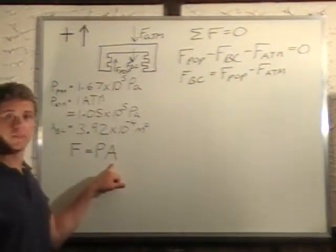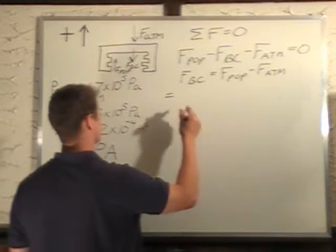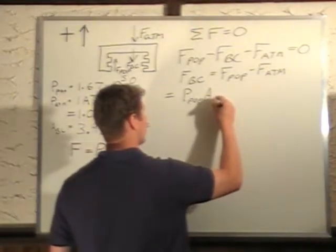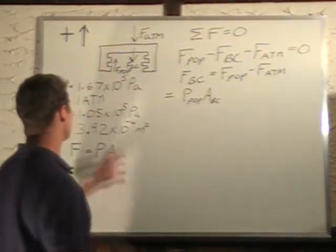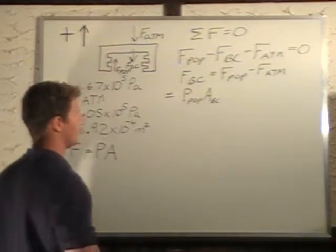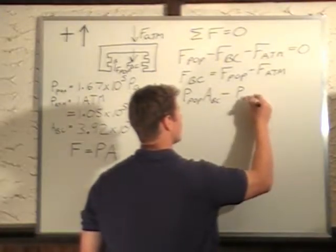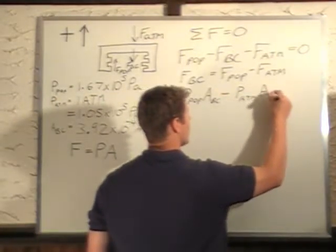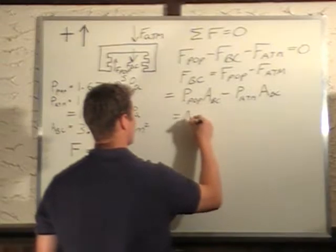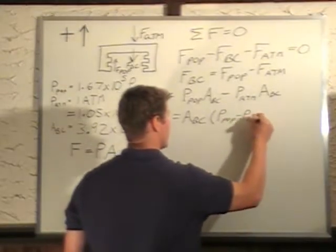We know force is equal to pressure times area, so we can plug that in. Force from the bottle cap equals force of the pop, which is pressure inside the pop times the area of the bottle cap — that is the area underneath the bottle cap, and we're assuming this area is the same on the bottom and on the top — minus the pressure of the atmosphere times the area of the bottle cap on top. Since area is common, we can factor that out. This equals area of the bottle cap times the pressure of the pop minus the pressure of the atmosphere.